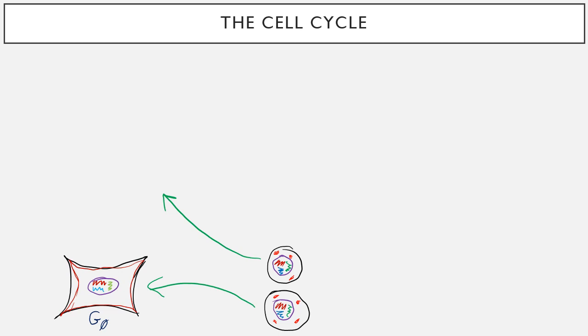So let's say this other daughter cell decides to stay in the cell cycle. What's the next step for it? The next step is that it gets a little bit bigger. Its nucleus doesn't change any. It still has dark red and dark green and dark blue chromosomes in there. It still has its organelles scattered around.